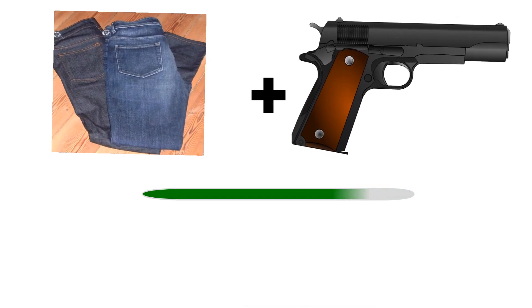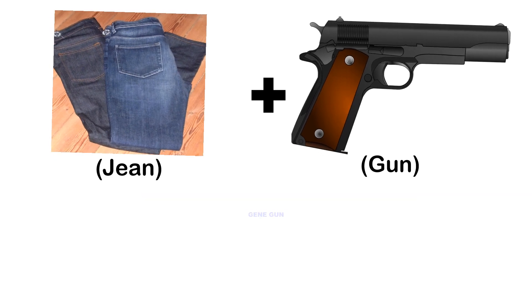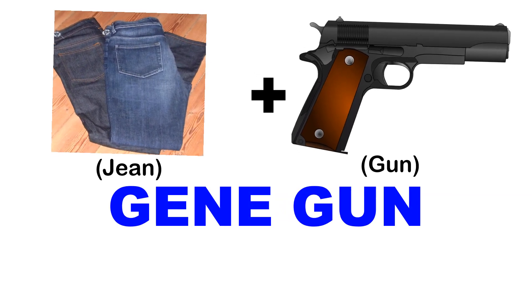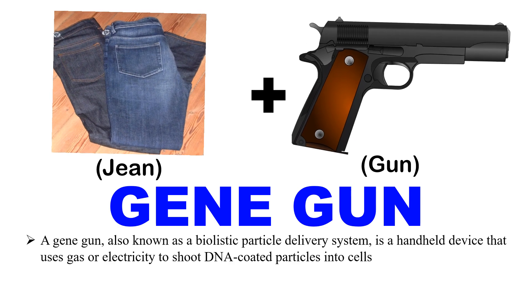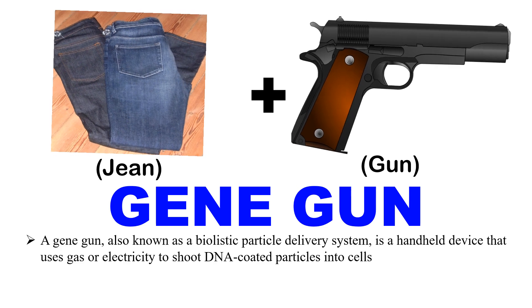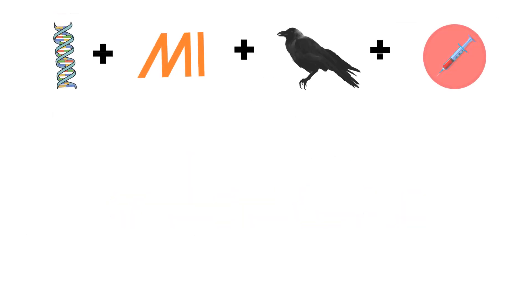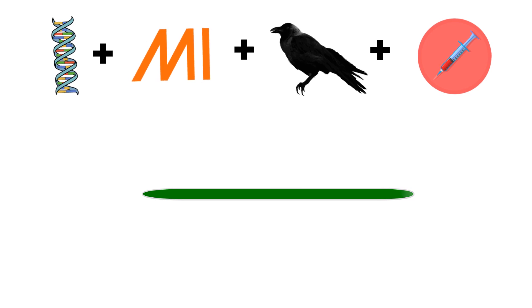The next puzzle — guess the scientific term from these two emojis. Time is running out. The correct answer is gene gun. The first emoji represents gene and the other represents gun. A gene gun is a technique in which DNA is shot inside a cell — the DNA is coated on golden beads and these beads are shot at the cell so that the DNA gets inserted inside. It is a DNA delivery method.